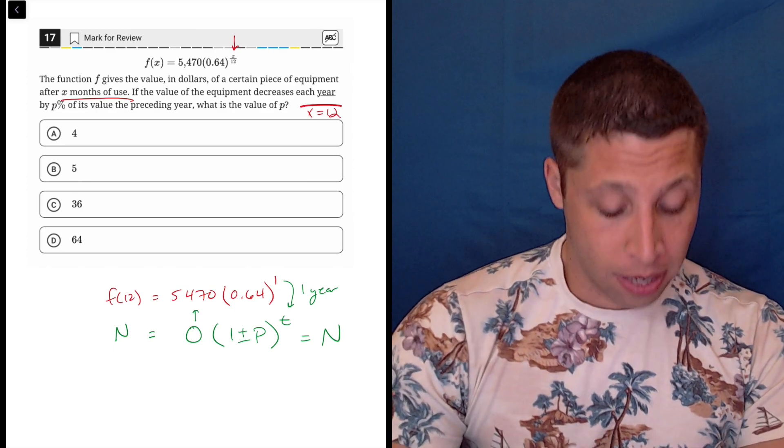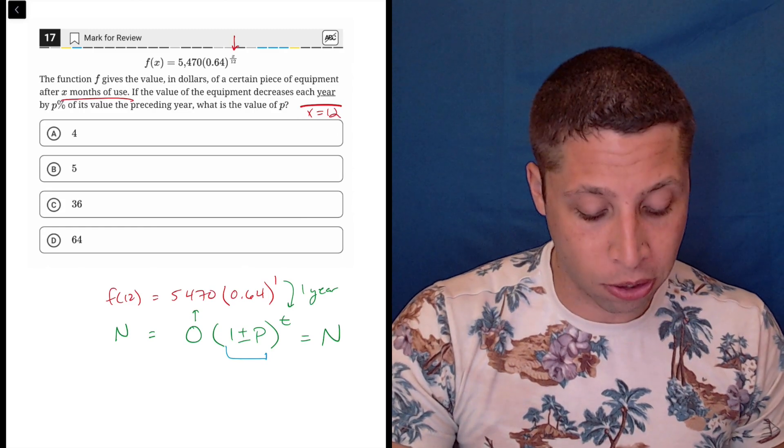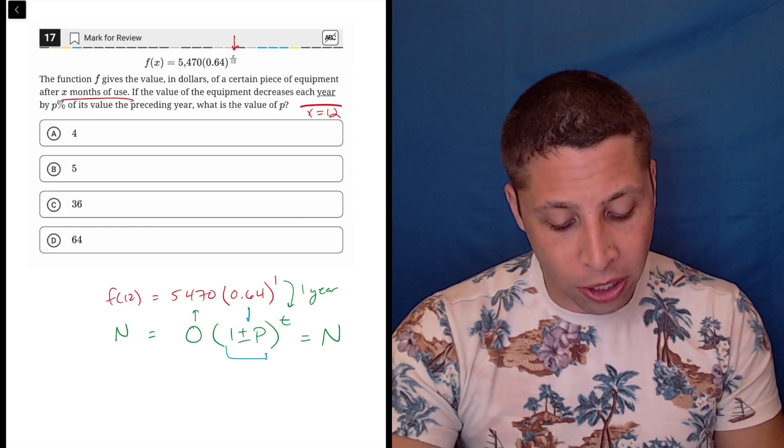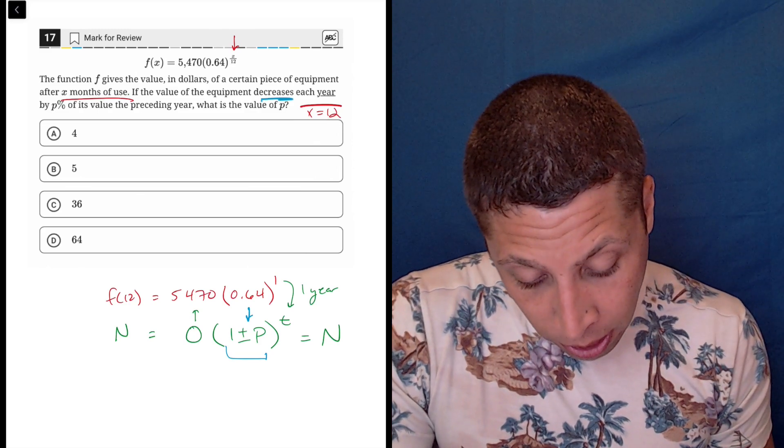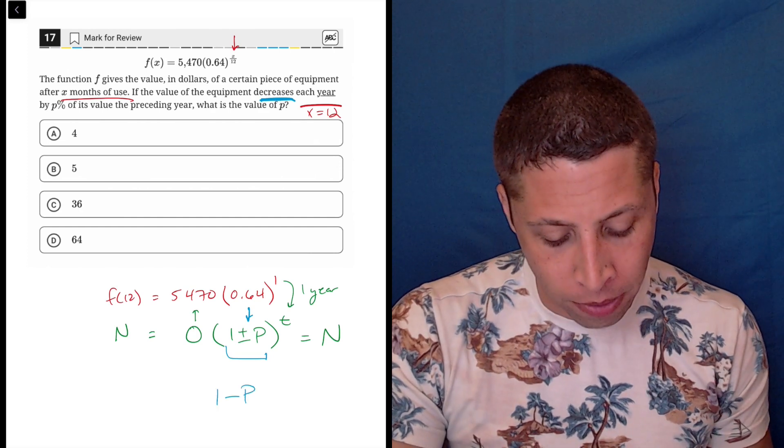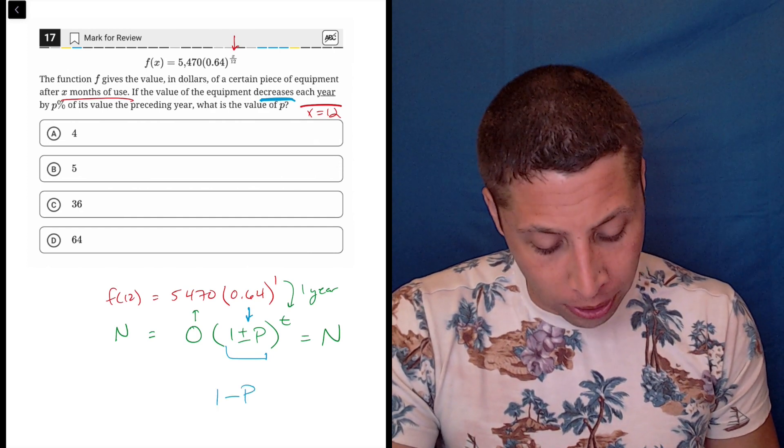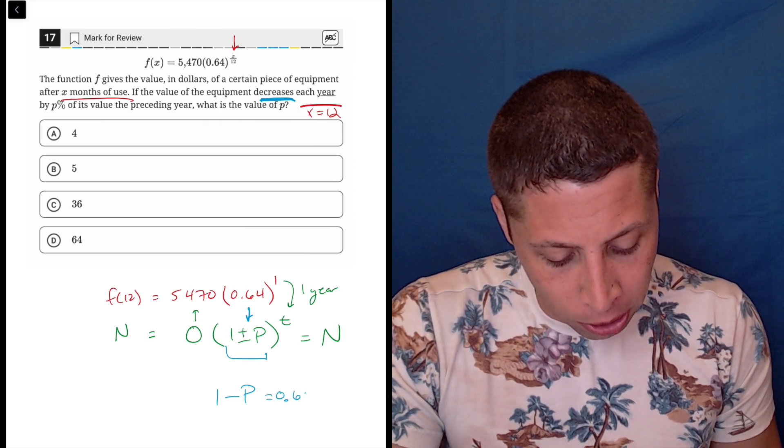So that's convenient because now they're asking for the percentage and that is really represented by this piece. In this case, (1 ± P). So we just need to convert this 0.64 into that. Now, because they told us it was a decrease, we know that it was really going to be (1 - P).